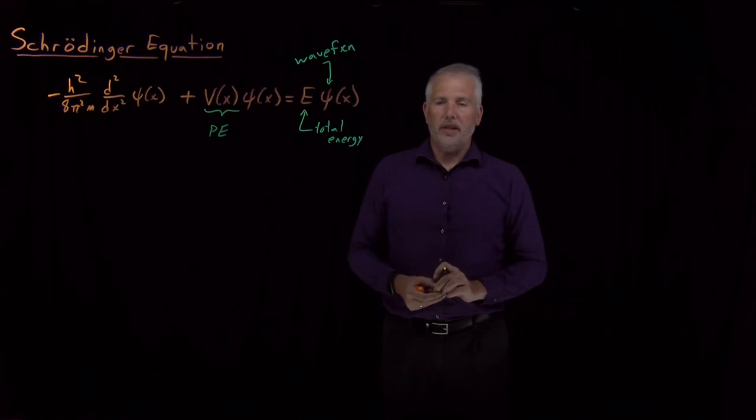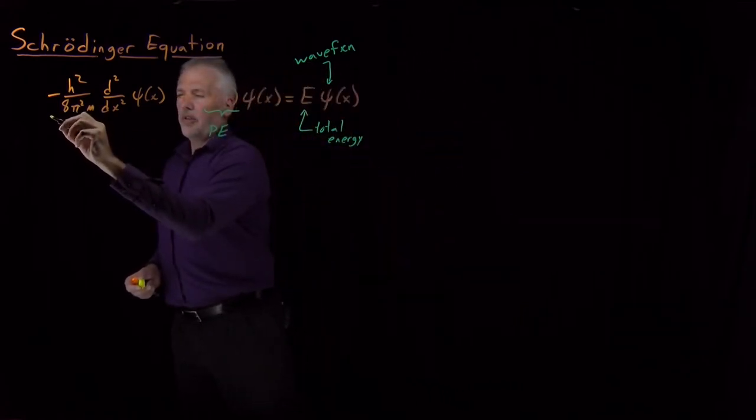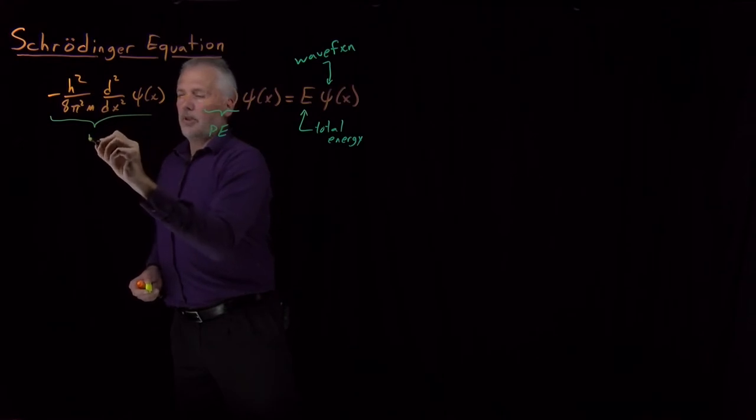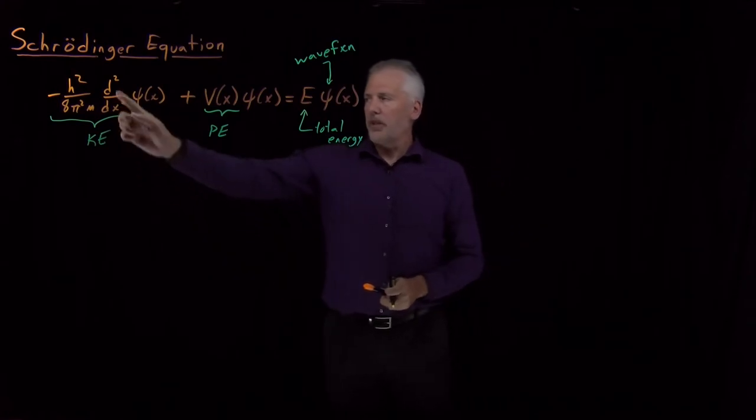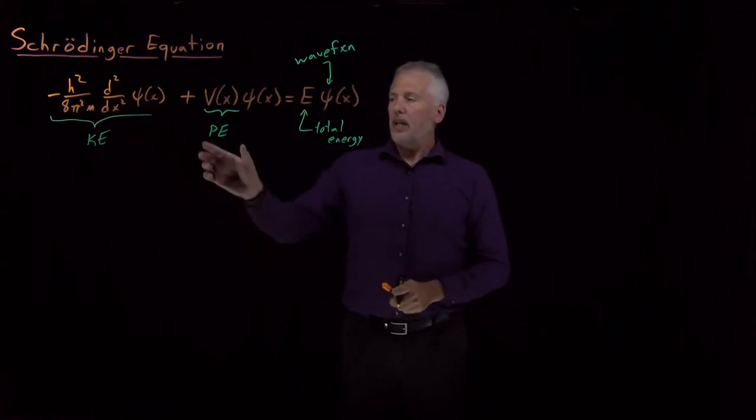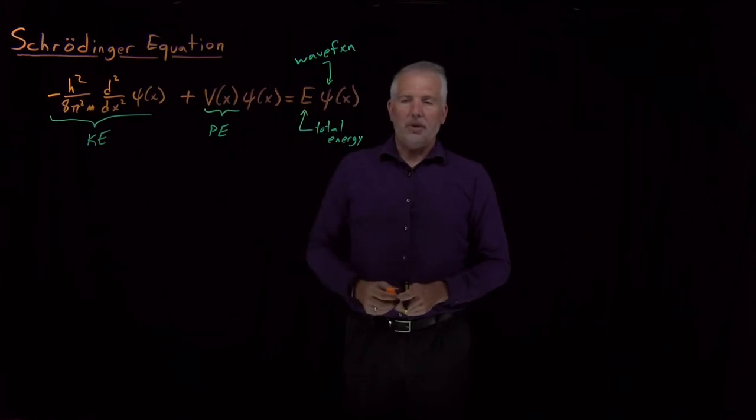Since total energy is the sum of the kinetic and the potential energy, in some way that shouldn't be entirely clear yet, this term gives the kinetic energy. The kinetic energy of the particle is given by this second derivative. The potential energy is given by this term, and the last term gives the total energy.